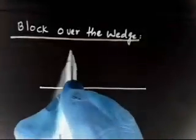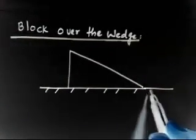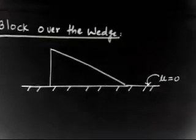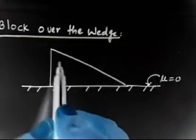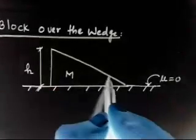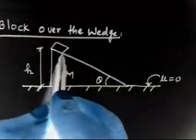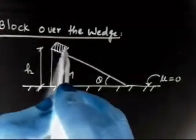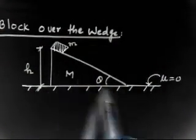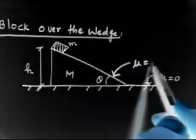There is a wedge, and this wedge is basically kept on a horizontal surface. This surface is smooth, that is mu equals zero. The mass of this wedge is M, the height is H, and the wedge angle is theta. There is a small mass m that is kept over the wedge. Now this wedge can move and this mass can also move, and this surface is also frictionless — mu equals zero.